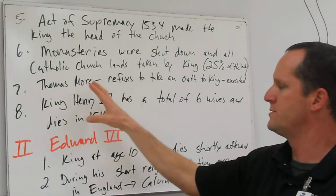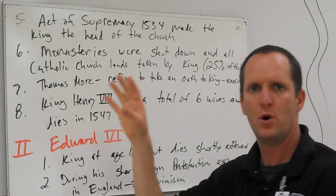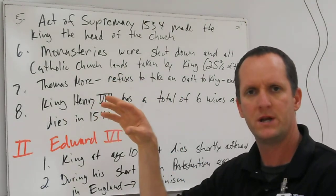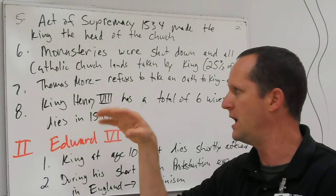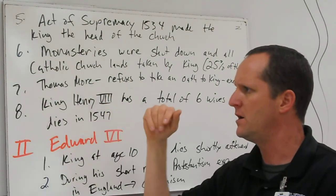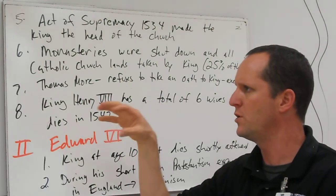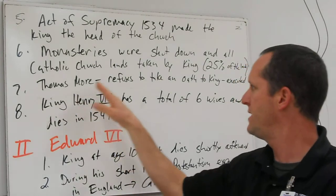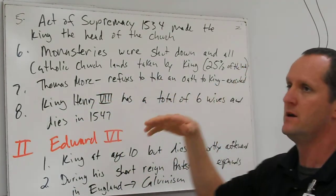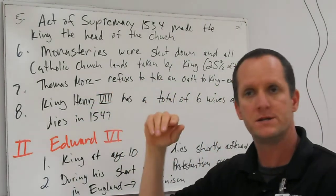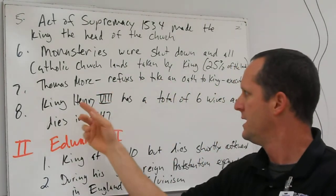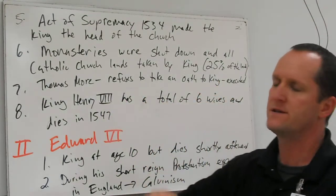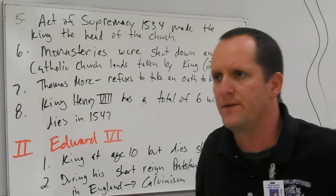Thomas More, who wrote Utopia, was a very influential person in England at this time. He was actually on the court of King Henry VIII, one of his advisors, but he refused to take an oath to the King, so he was executed. King Henry VIII had a total of six wives and died in 1547.